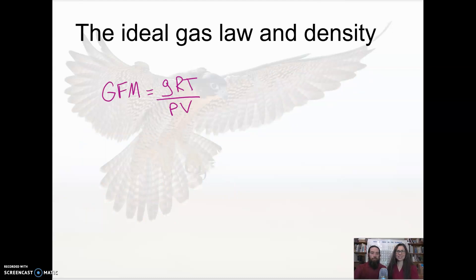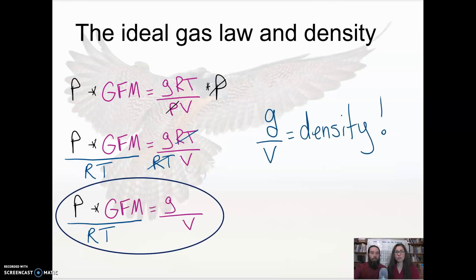All right, the ideal gas law in density. Well what's density? Density is mass per unit volume. So that's where we're trying to get to. If we start with what we just created, with all of our manipulations, our gram formula mass equals grams times RT over PV. If we manipulated this a little bit, multiply both sides by pressure, and then we divide both sides by RT, we end up with grams over volume on the right. Well, grams over volume is what we needed, which is density. So now we have a formula to calculate density if we have our gram formula mass of our gas.